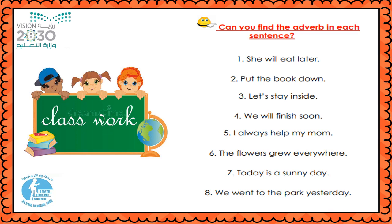Number three: 'Let's stay inside.' Where should we stay? Inside. The adverb is 'inside.' Number four: 'We will finish soon.' When will we finish? Soon. The adverb is 'soon.' Number five: 'I always help my mom.' When do you help your mom? Always. The adverb is 'always.' Number six: 'The flowers grew everywhere.' Where did the flowers grow? Everywhere. The adverb is 'everywhere' — circle it.